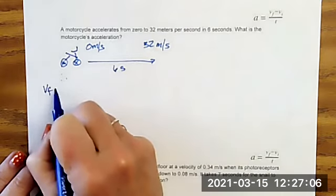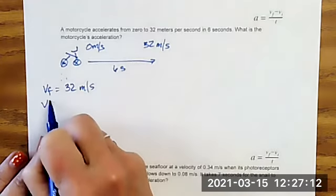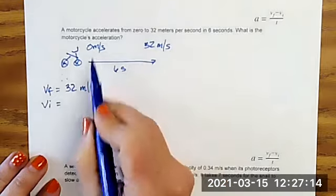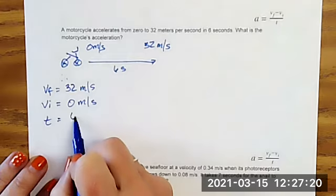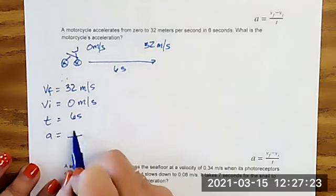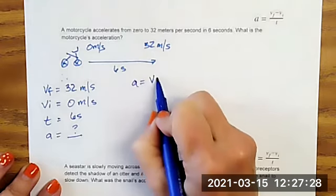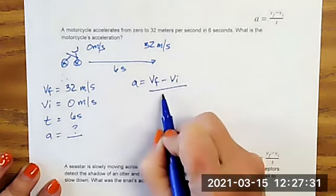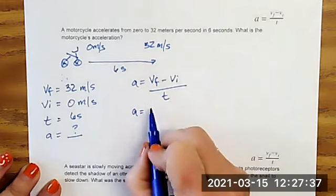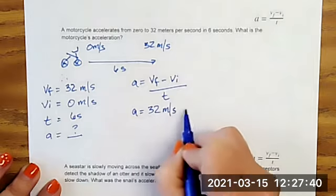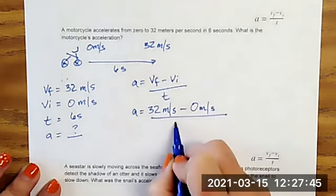So my velocity final is 32 meters per second. My velocity initial is zero meters per second and the time it takes is six seconds and we're solving for acceleration. So our formula is going to be acceleration is equal to velocity final minus velocity initial over time. And I'm going to plug in my variables. So my final velocity is 32 meters per second minus my initial velocity, which is zero meters per second over six seconds.